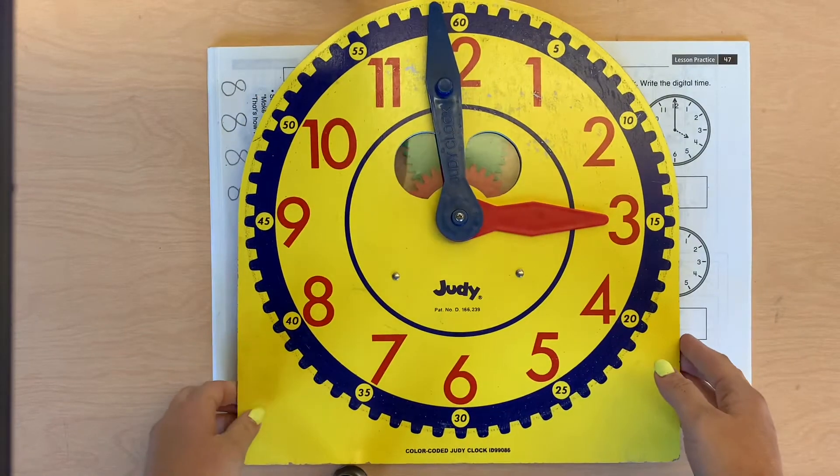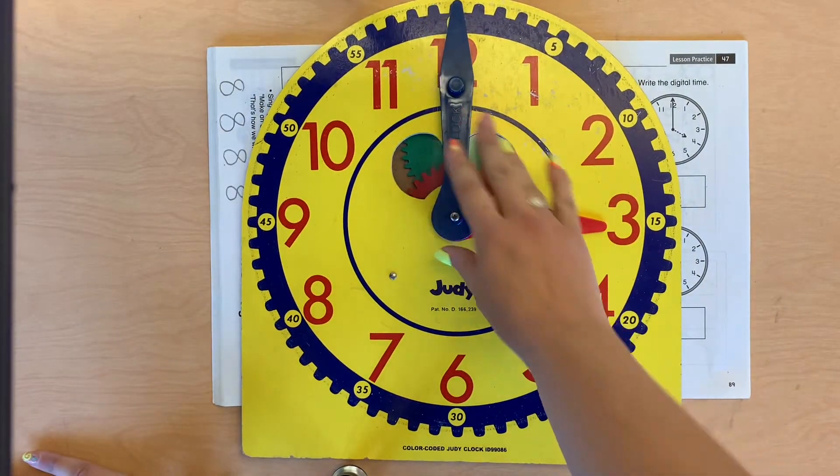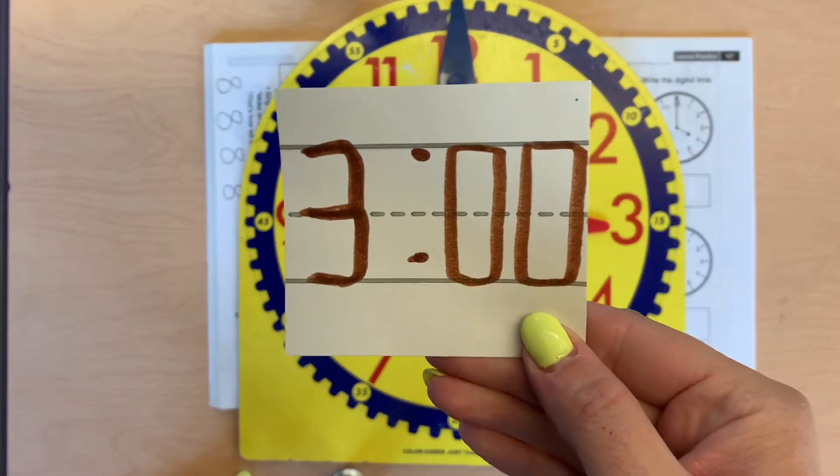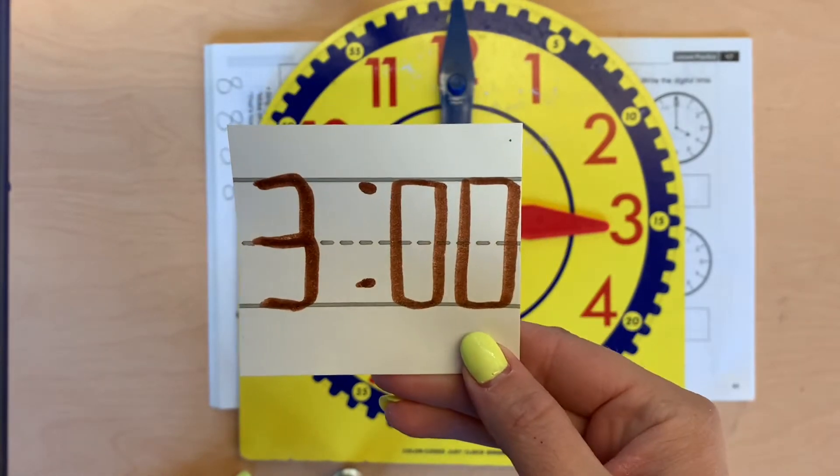All right, so we're going to work on some time again today. Remember, this is called an analog clock, and when you see a time written like this, this is called a digital clock, like on the oven or the microwave.